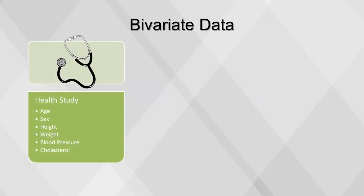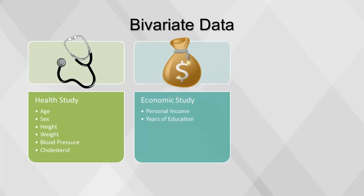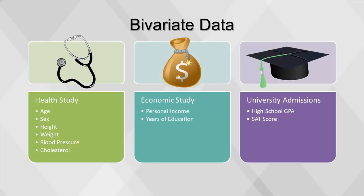For example, in large health studies of populations, it is common to obtain variables such as age, sex, height, weight, blood pressure, and total cholesterol on each individual. Economic studies may be interested in, among other things, personal income and years of education. As a third example, most university admissions committees ask for an applicant's high school grade point average and standardized admission test scores, like the SAT.